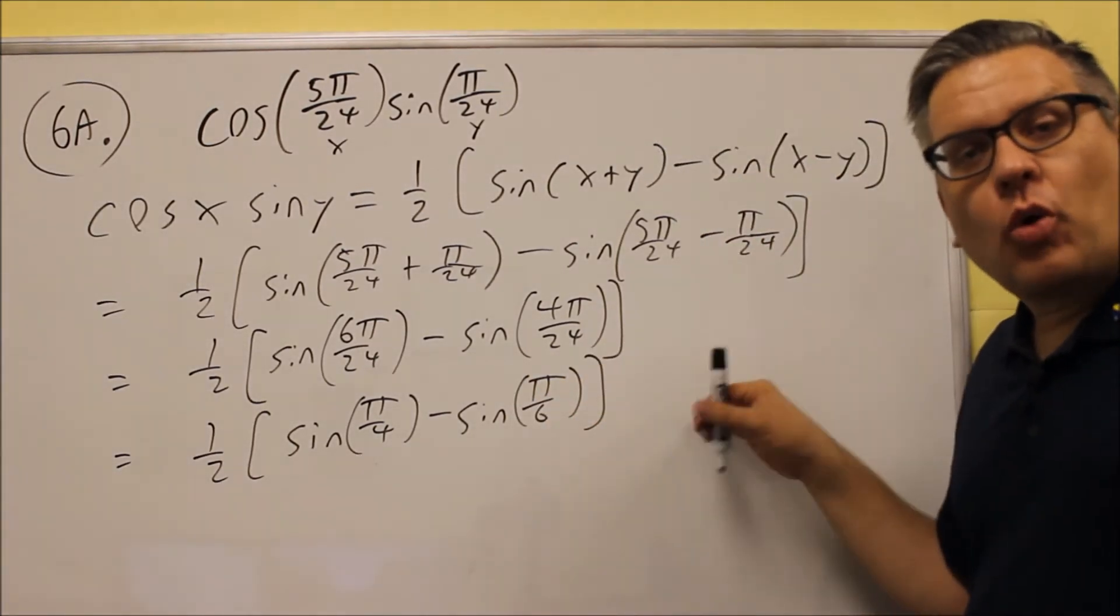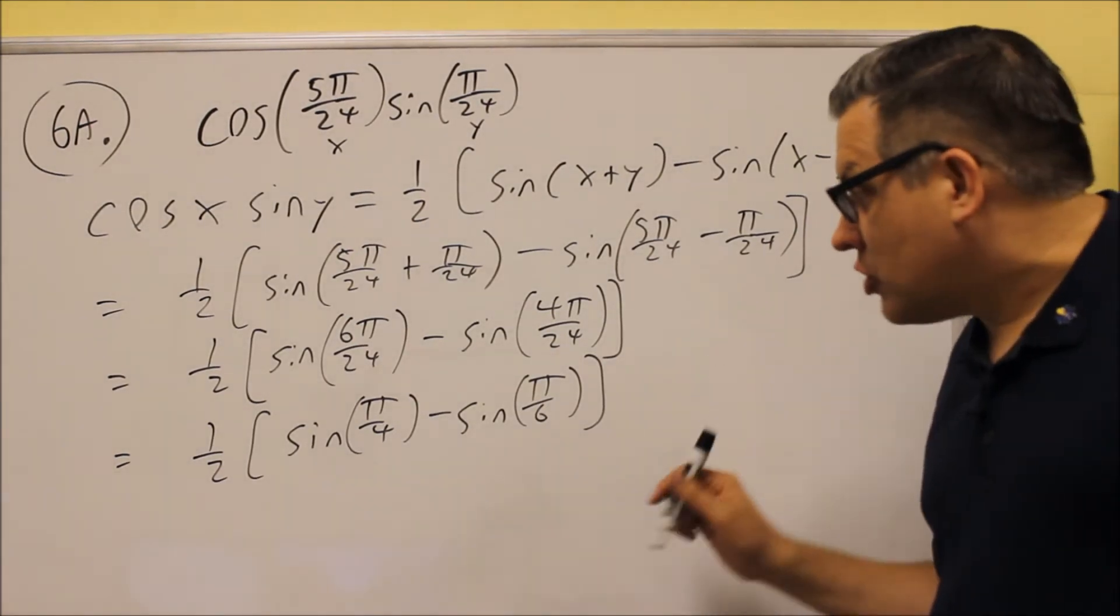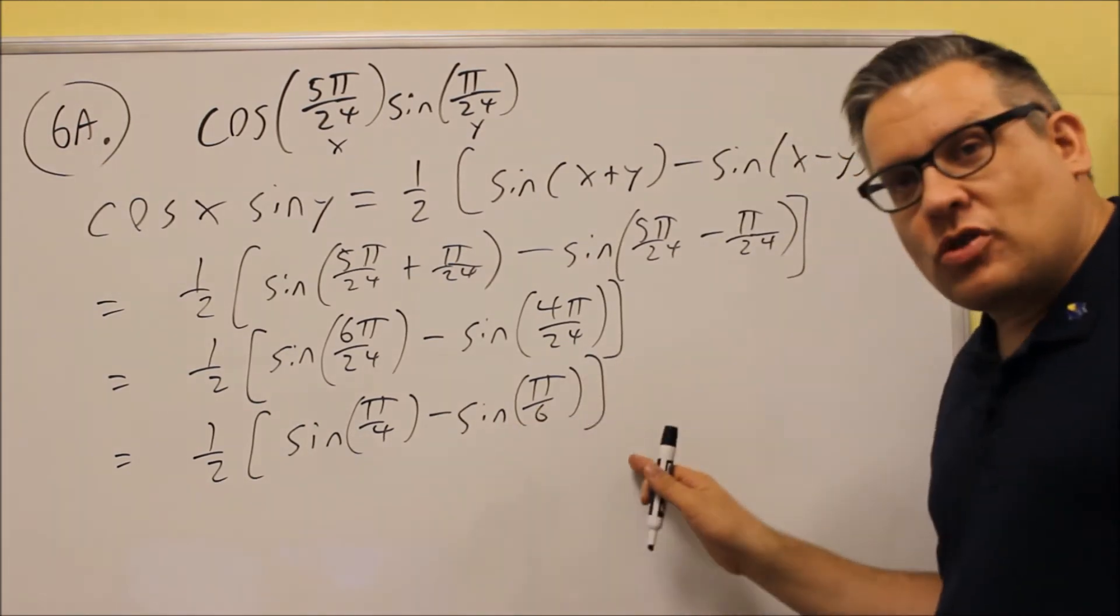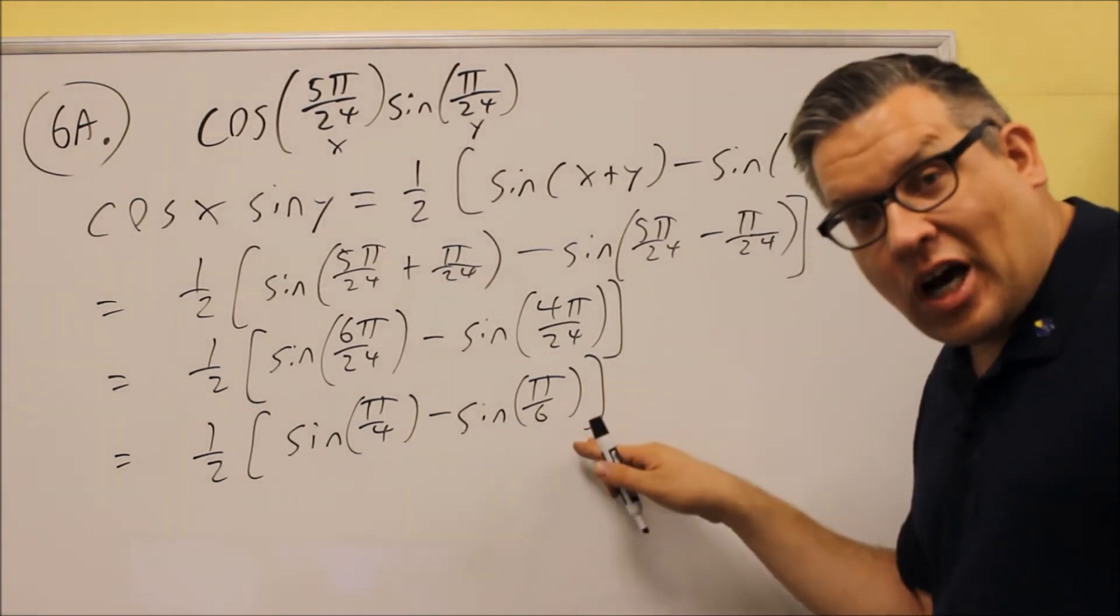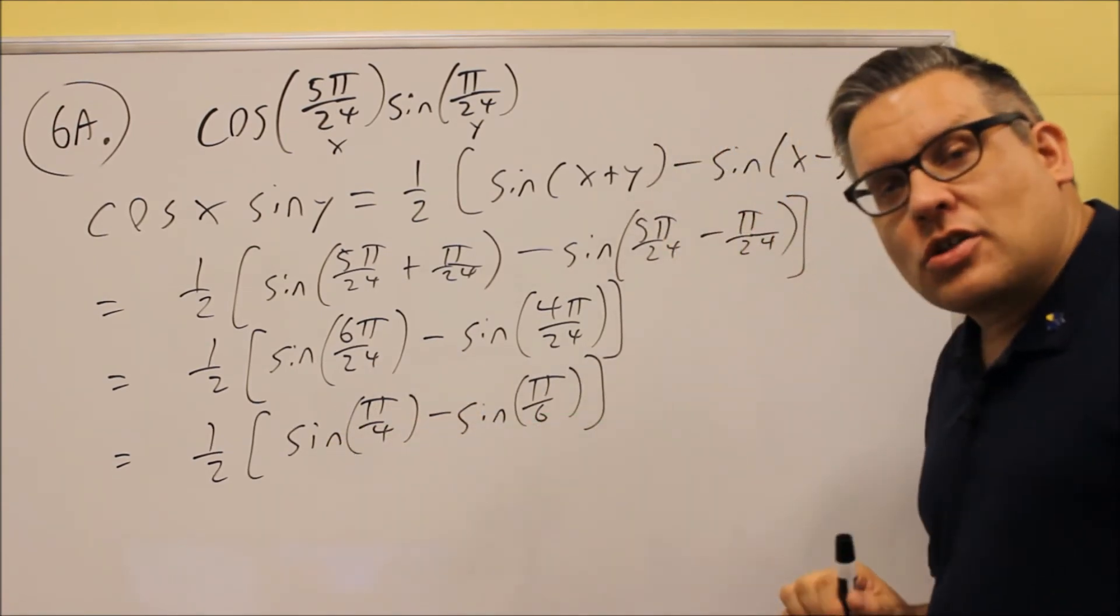Once you get down to this point, you don't want to leave your answer in this form. It says find the exact value, which means you need to put values in from the unit circle. Often times students for some reason will go down to here and stop. You want to keep going, you want to put in the values for each of these from the unit circle.